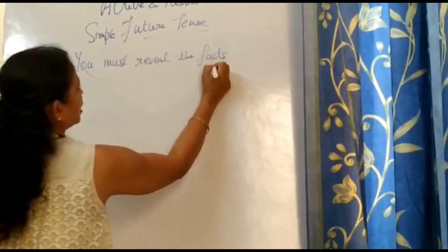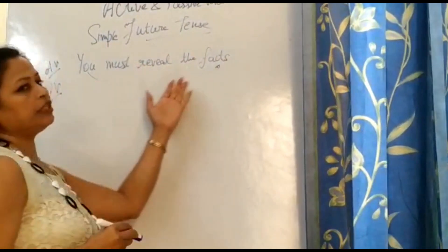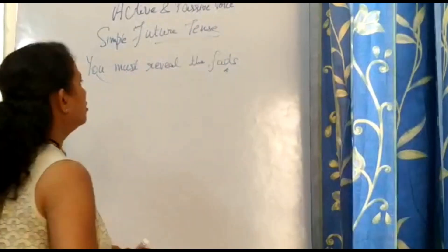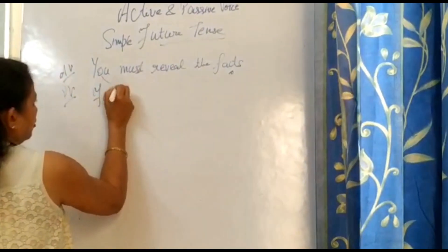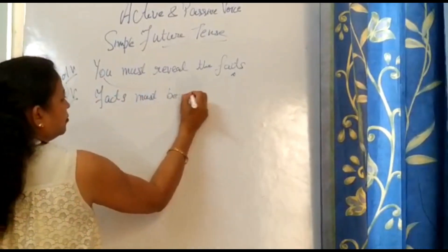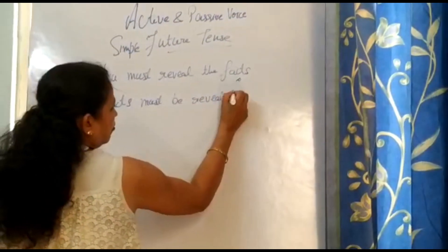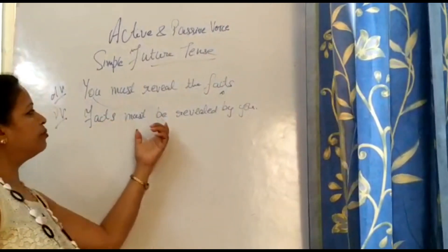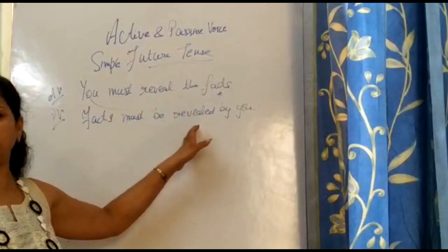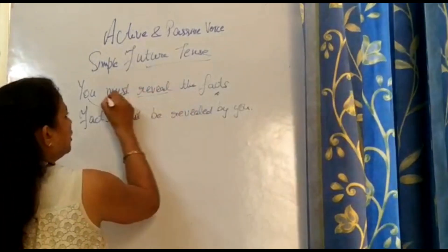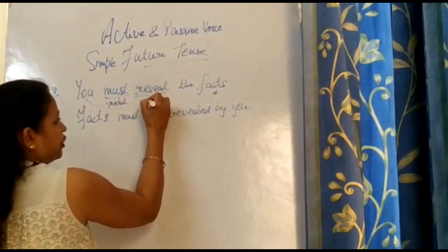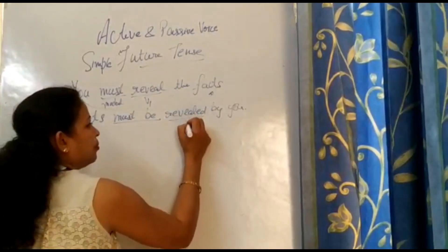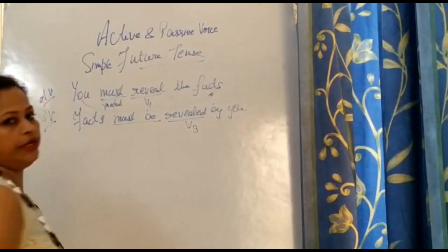For passive voice, we have to interchange the two things. 'You' is the subject, the doer. He is supposed to reveal the facts. 'Facts' is the object. So we interchange the positions: 'Facts must be revealed by you.' In passive voice, we always use V3, the third form of the verb. Here you have a modal along with the first form of verb, so in passive voice, 'must' changes to 'must be' plus V3.